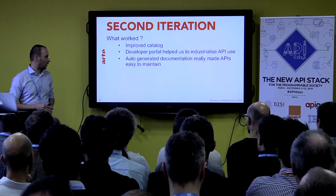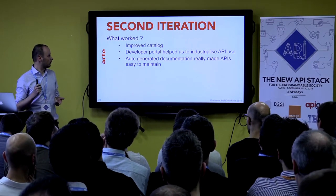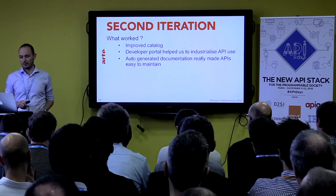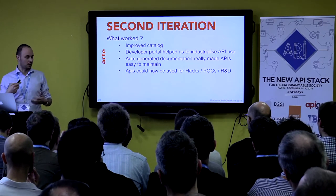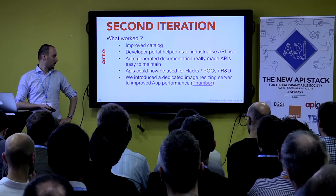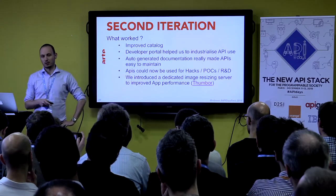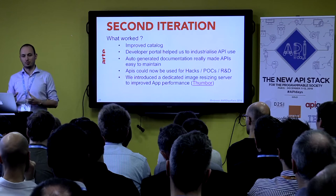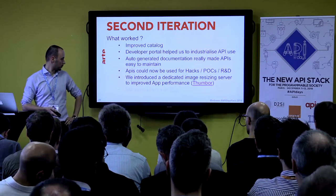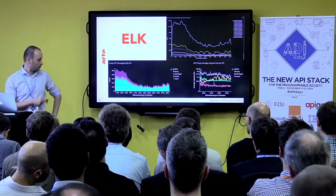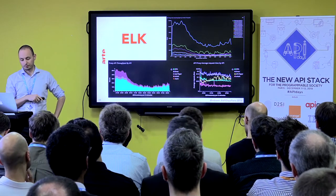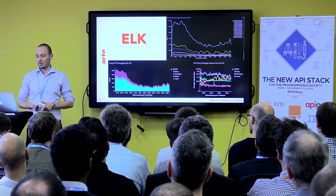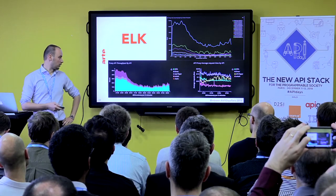What really worked: catalog worked well, the developer portal was awesome, and generating documentation automatically based on code was great. We could start making new use cases with our APIs. We also used a dedicated image resizing server, which helped us deliver exactly the image required for every device — this really improved performance. The monitoring stack was really impressive because we used it to monitor our clients' requests, and we could detect API abuse. That's something we really look at every day.